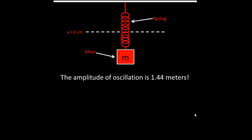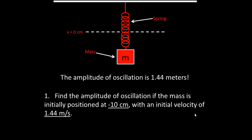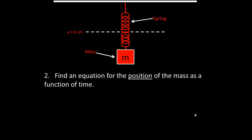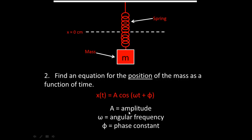The amplitude of oscillation is 1.44 meters — question one is solved. For question two, we need to find the equation for position as a function of time. Since this is a simple harmonic oscillator, the position equation is x(t) equals A times cosine of (omega t plus phi), where A is amplitude, omega is angular frequency, and phi is the phase constant — the latter two still need to be calculated.